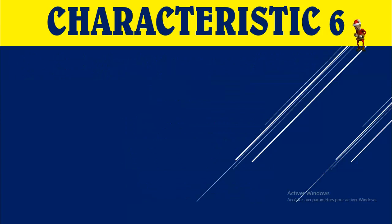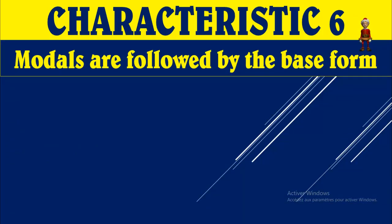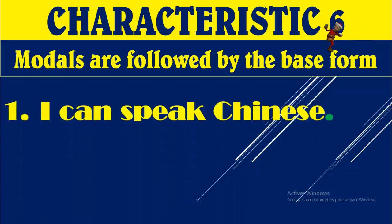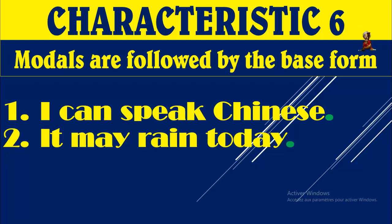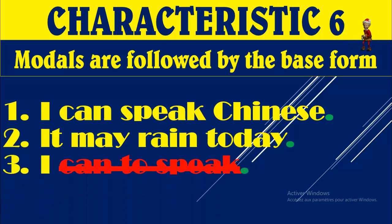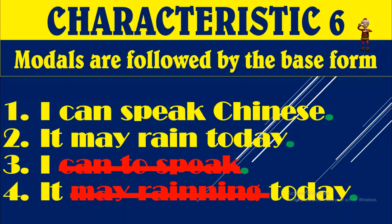The last characteristic is number six: modals are always followed by the base form of the verb. Look: 'I can't speak Chinese' — after 'can,' 'speak' is the base form. 'It may rain' — after 'may,' 'rain' is the base form. You can't say 'I can't speaks' — impossible. 'I can't speaking' — impossible. 'I can't spoke' — impossible. 'I can't spoken' — impossible. Modals are always followed by the base form of the verb. So 'I can't speak' with -s is a big mistake, and 'it may raining' is impossible — big mistake.